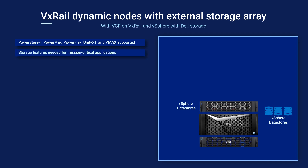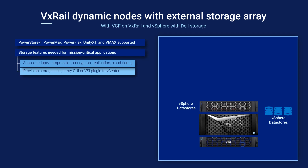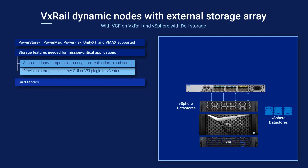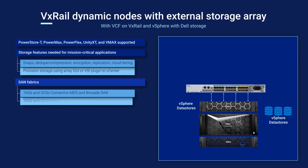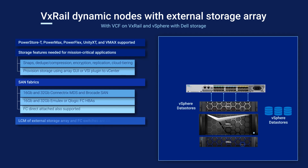Storage provisioning and the use of storage array data services are not managed by VxRail. Customers can provision external fiber channel storage with VMFS as the primary storage. Storage administrators can continue to use their respective management clients, or the VSI plugin, for an integrated vCenter management experience. In a standardized VMware environment, VSI can centralize more management onto vCenter as VxRail clusters are managed through the VxRail Manager plugin. For fiber channel attached storage, 16GB and 32GB SAN fabrics are supported through Connectrix MDS and Brocade SAN switches, and fiber channel HBAs are needed for each node.